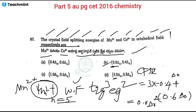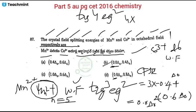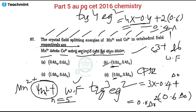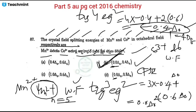For Co³⁺, it is a d⁶ weak field case with configuration t₂g⁴ eg². CFSE = 4×(−0.4) + 2×(+0.6) Δ₀ = −1.6 + 1.2 = −0.4 Δ₀, which is also expressed as −4Dq. So option B is correct — Mn²⁺ CFSE is 0 and Co³⁺ CFSE is −0.4 Δ₀.